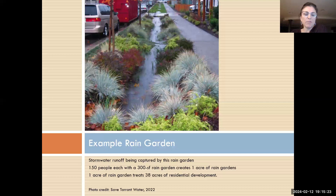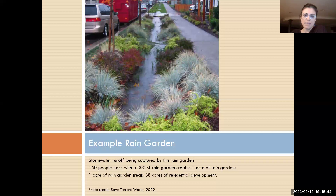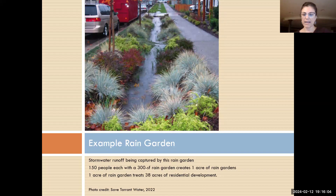Here's a nice example of a rain garden located between the street and the sidewalk — they don't all have to be round or teardrop shaped; you can have a linear rain garden. Tonight we had 150 people sign up, and if each person had a 300 square foot rain garden, we would create one acre of rain garden just from this call. If everybody does a little bit, it really adds up.